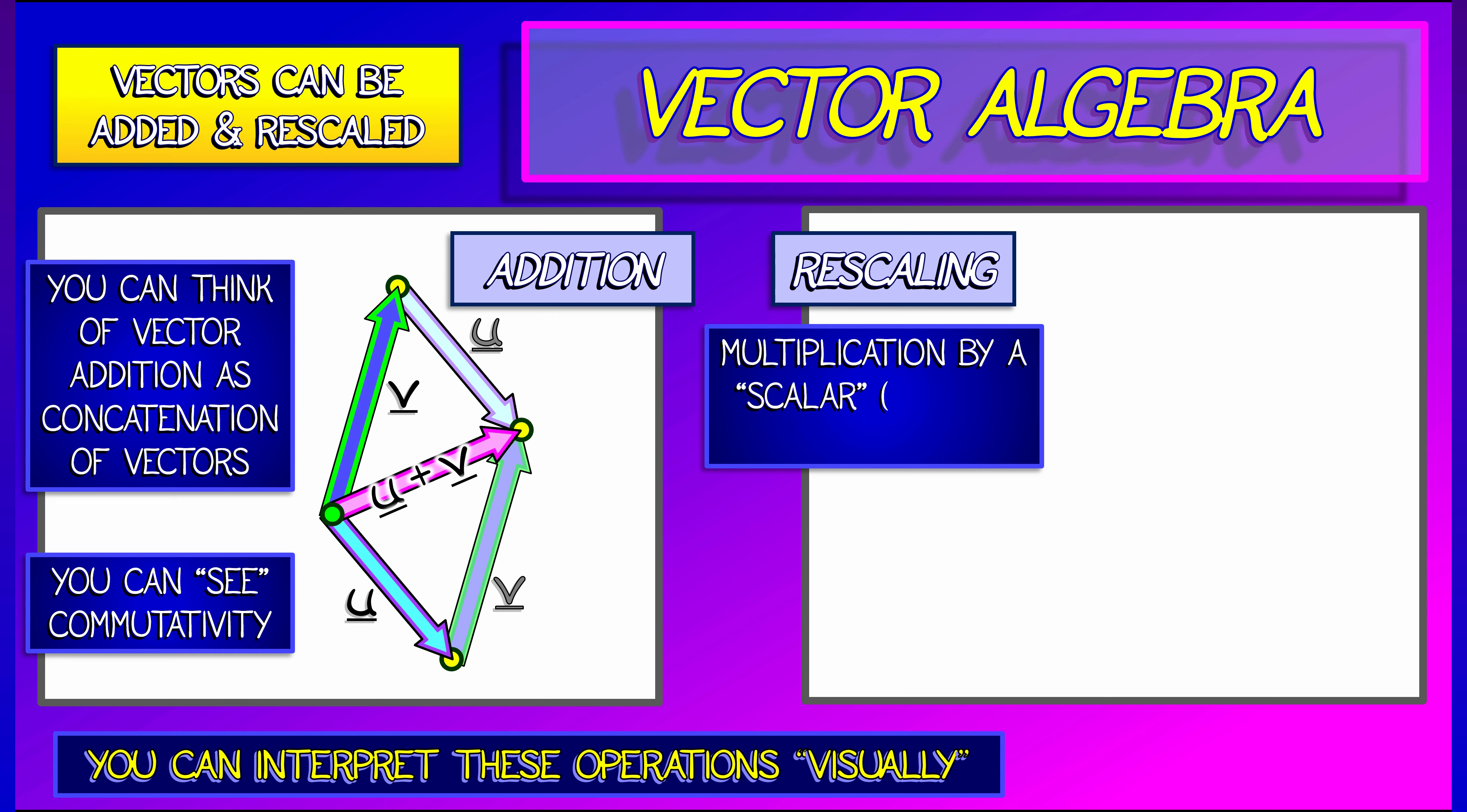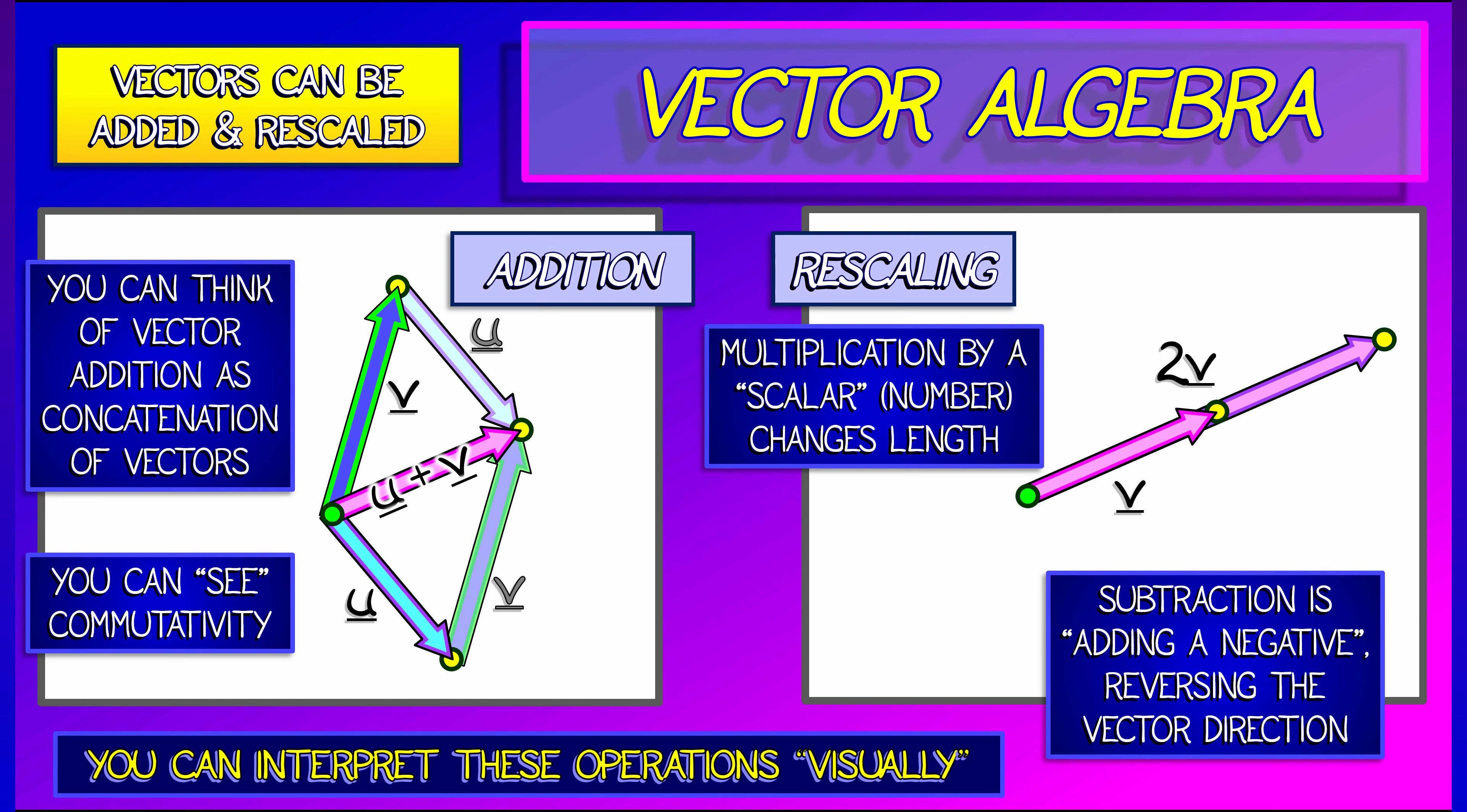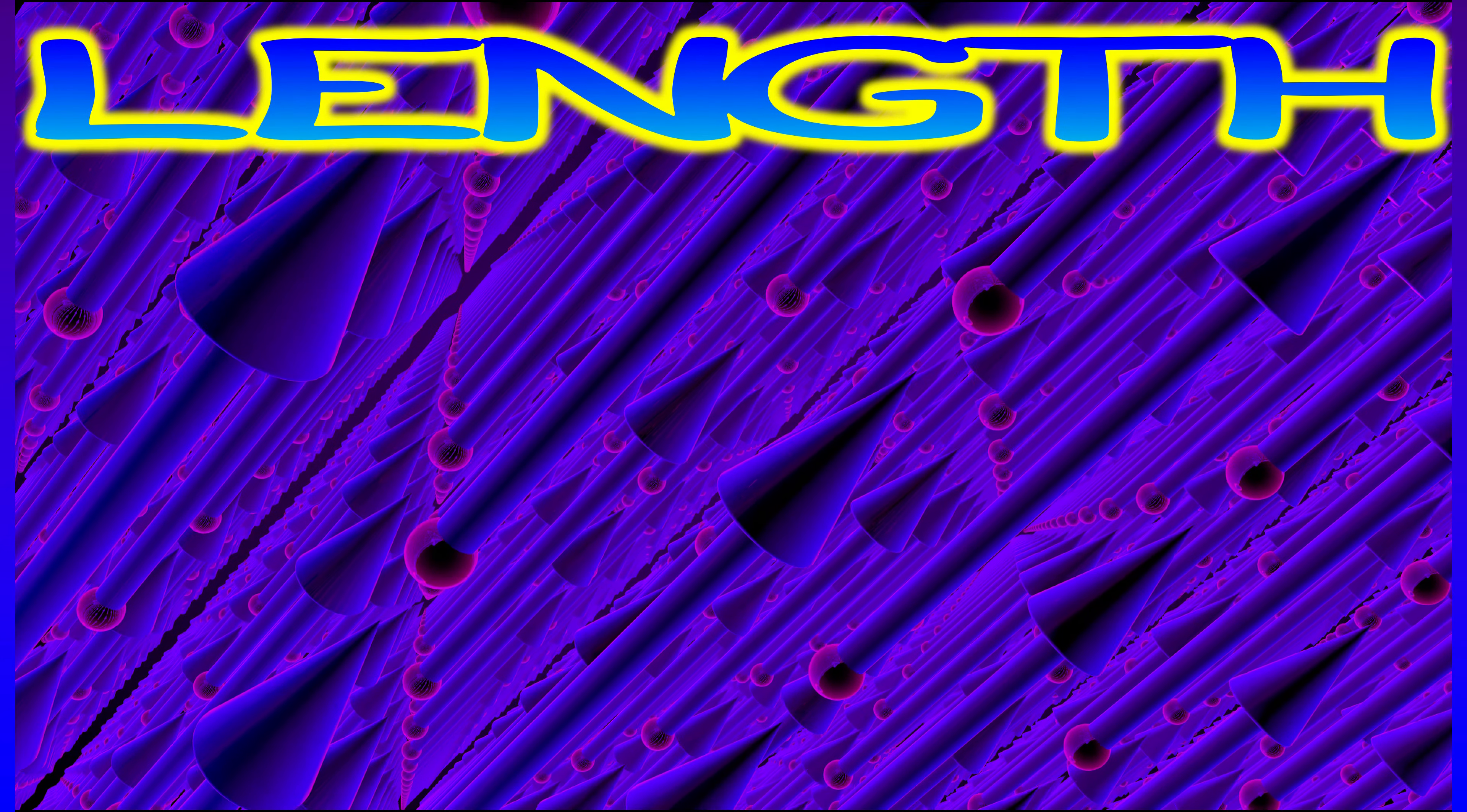What about rescaling? Multiplication by a scalar is stretching out a vector while keeping the direction the same. If I double a vector v, then all of the components double in size—it's as if you've stretched it out to twice its length. Vector subtraction makes sense as multiplying all components by negative one, which keeps the vector the same length but reverses direction. Don't forget that visual interpretation. It's going to be so useful.